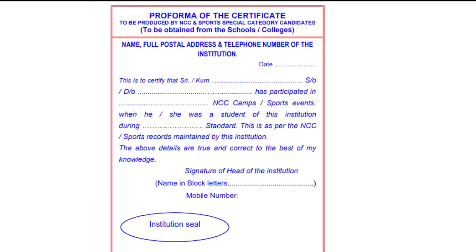Next is the format for the certificate to be done for NCC and Sports category students. This should be done by the school or campus. Same as before — first include the name, full postal address, and get it done by the institution in the correct way.